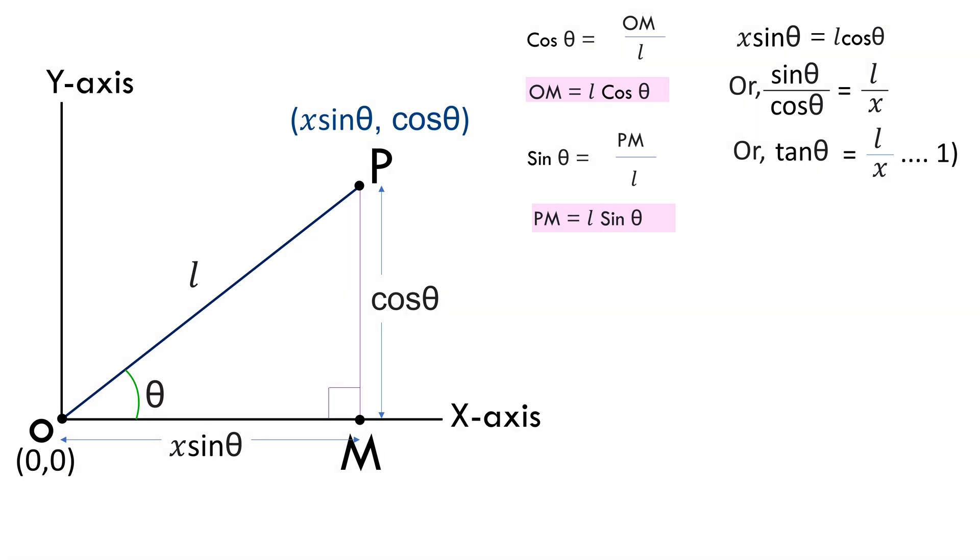Now, let's equate the two values of PM. This gives us cos theta equals to l sin theta. Or sin theta by cos theta equals to 1 by l. Or tan theta equals to 1 by l. Let this be equation 2.